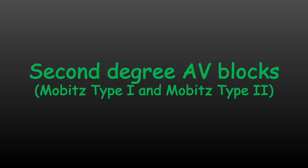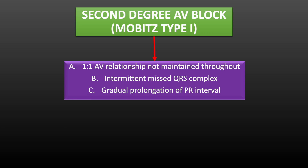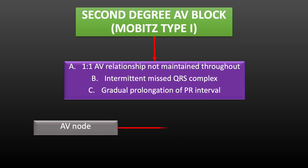Now we will understand about 2nd degree AV block. As mentioned earlier, it can be of 2 types: Mobitz type 1 and Mobitz type 2. Type 1 2nd degree AV block is also called as Wenckebach phenomenon. The criteria for diagnosis of 2nd degree type 1 AV block: 1-to-1 AV relationship is not maintained throughout because intermittently a P wave will not be followed by a QRS complex. There is gradual prolongation of PR interval and then there is one missed conduction to ventricle — that is, a QRS complex will not be present following a P wave. This pattern repeats itself after the missed QRS complex because of resumption of AV nodal conduction. This block occurs because of delay at the level of AV node, hence this is a suprahisian type of conduction block.